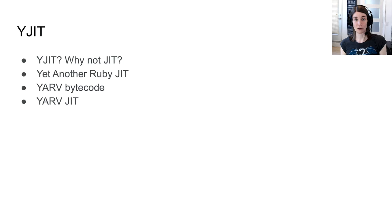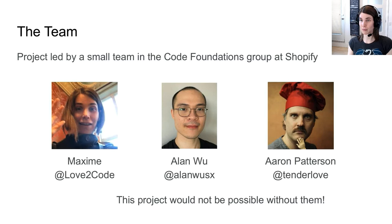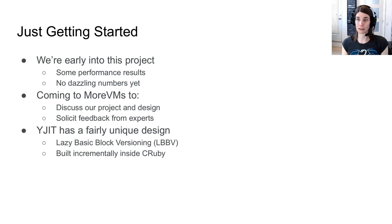YJIT stands for Yet Another Ruby JIT, which is a nod at the YARV bytecode that we're compiling. This project is a team project led by a small team in the Code Foundations group at Shopify — myself, Alan Wu, and Aaron Patterson — and I've had the chance of being helped by some amazing engineers deeply familiar with CRuby.